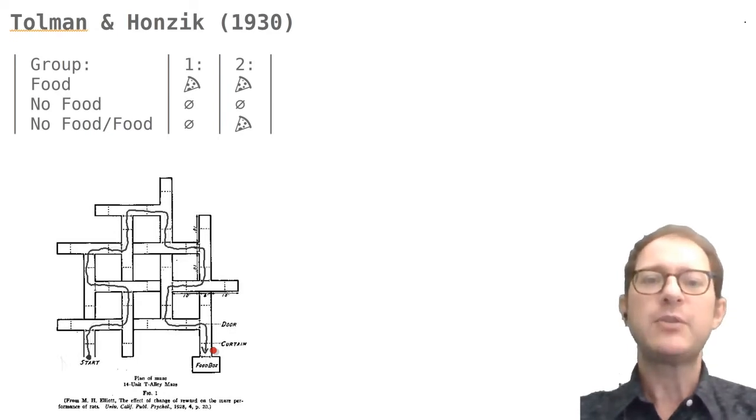Tolman and Honzik also put curtains in the maze, so that the rats could not just see where the dead ends were. The curtains are drawn as dashed lines in the image.